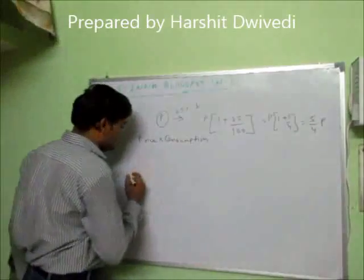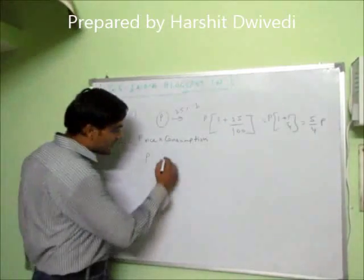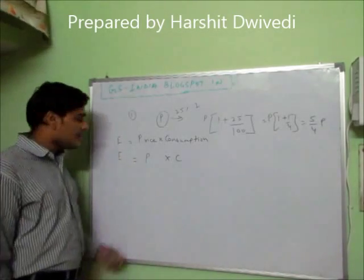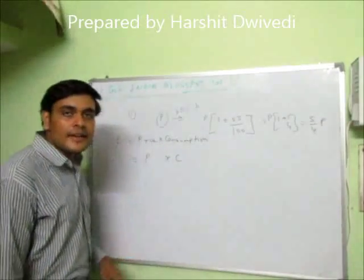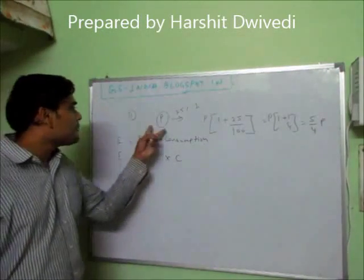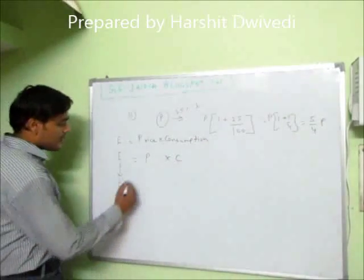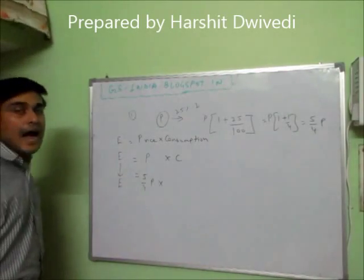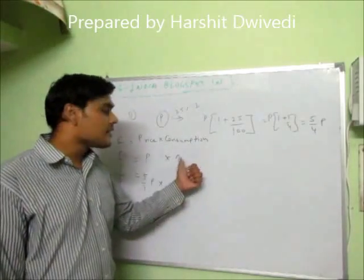Initially the price was P and the consumption I assume as C. So the expenditure initially was E, which equals P into C. These are assumed variables. Now it is saying that in the second case the expenditure remains constant, so expenditure is E only. But the price becomes 25% more, that is it becomes 5 by 4 P.